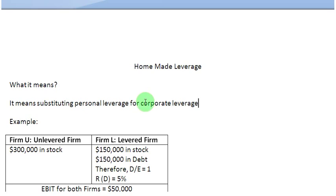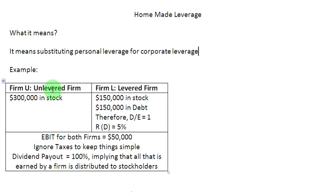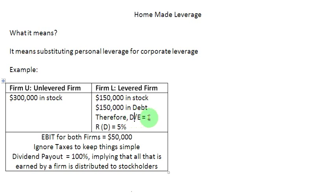Now we are going to see how to apply this concept to a set of data. We have two firms here. Firm U is unlevered and Firm L is a levered firm. The entire value of the unlevered firm is invested in its stock, $300,000. The value of the levered firm is split half and half between stock and debt — $150,000 in stock and another $150,000 in debt — so the debt-to-equity ratio of the levered firm is 1.